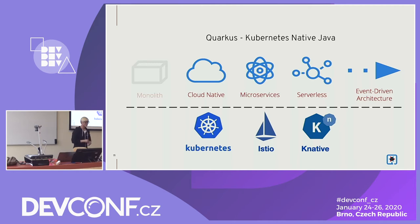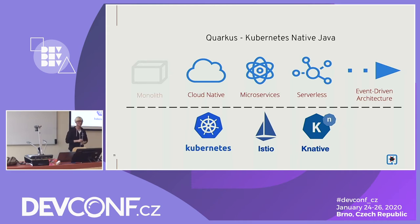One thing to be aware of: Quarkus has removed the monolith architecture. Some people ask 'how do we migrate our existing Tomcat-based Java application to Quarkus?' — you shouldn't. Quarkus is definitely focused on cloud native, microservices, serverless, and event-driven architecture rather than monolith. If you want to migrate, it's not migration — it's a rewrite. Please don't migrate from a heavyweight Frankenstein Java application to Quarkus. Not a chance.